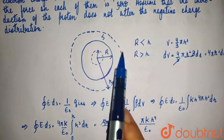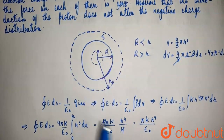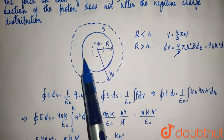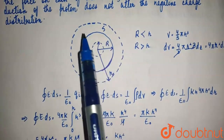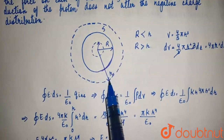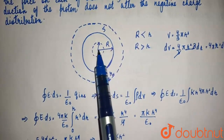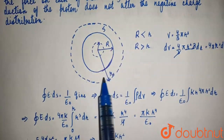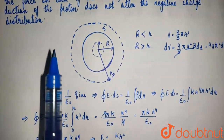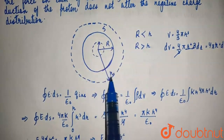Now we calculate the electric field for the sphere at a distance r greater than R. There is charge only inside the original sphere of radius R — there is no charge in the outer hypothetical sphere. So when we calculate the electric field at this distance, we need to integrate only from 0 to R, because there is no charge beyond R.